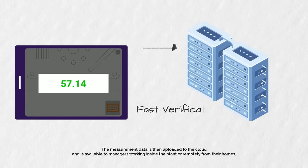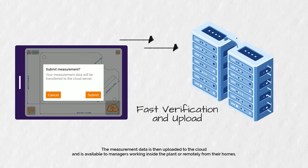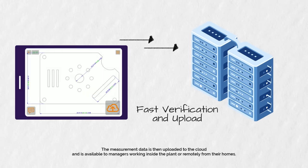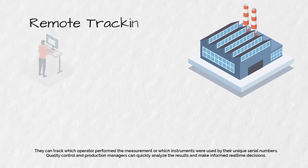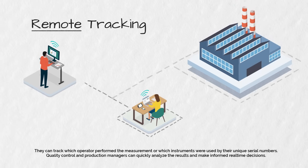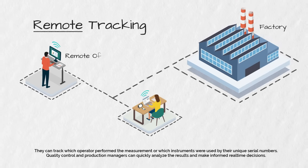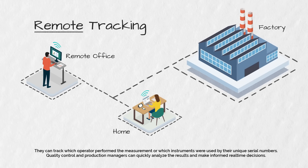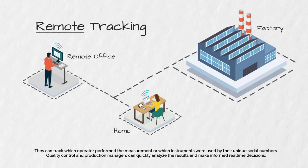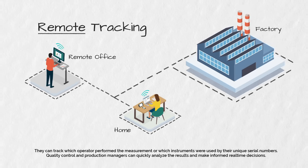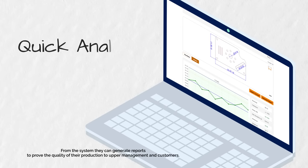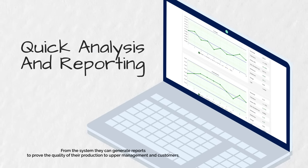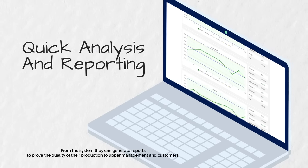The measurement data is then uploaded to the cloud and is available to managers working inside the plant or remotely from their homes. They can track which operator performed the measurement or which instruments were used by their unique serial numbers. Quality control and production managers can quickly analyze the results and make informed real-time decisions. From the system, they can generate reports to prove the quality of their production to upper management and customers.